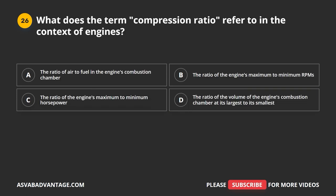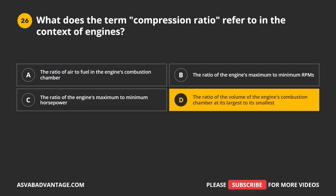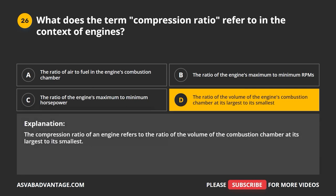Question 26. What does the term 'compression ratio' refer to in the context of engines? A. The ratio of air to fuel in the engine's combustion chamber. B. The ratio of the engine's maximum to minimum RPMs. C. The ratio of the engine's maximum to minimum horsepower. D. The ratio of the volume of the engine's combustion chamber at its largest to its smallest. The compression ratio of an engine refers to the ratio of the volume of the combustion chamber at its largest to its smallest.